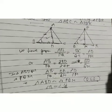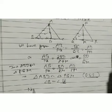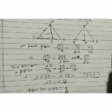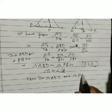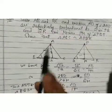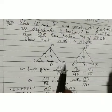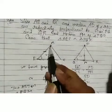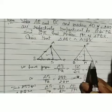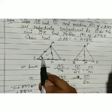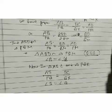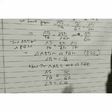Now in triangle ABC and triangle PQR, we have AB/PQ = BC/QR (given), and the included angles B and Q are equal (angle B = angle Q), which we just proved.